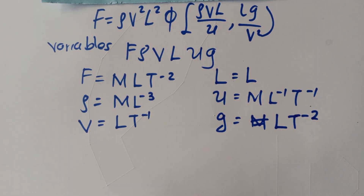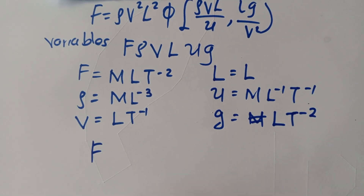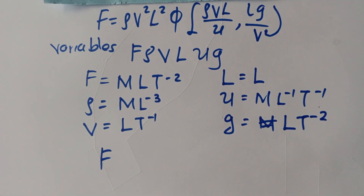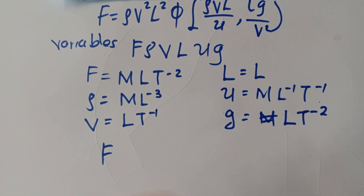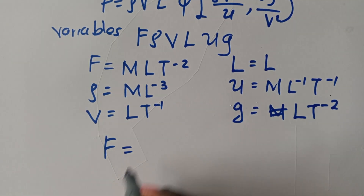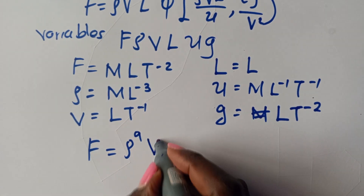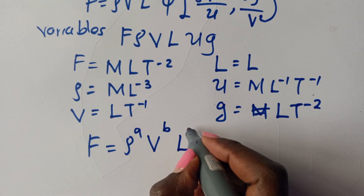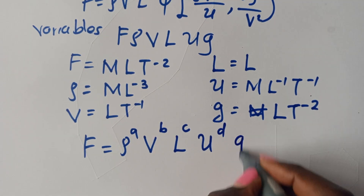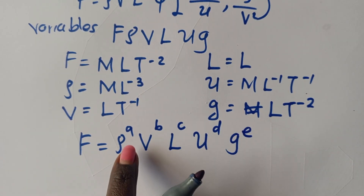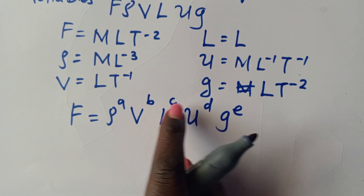In Rayleigh's method, write all the variables and introduce powers — A, B, C, D, and E — to each variable. So F is equal to rho raised to A, V raised to B, L raised to C, mu raised to D, and G raised to E.